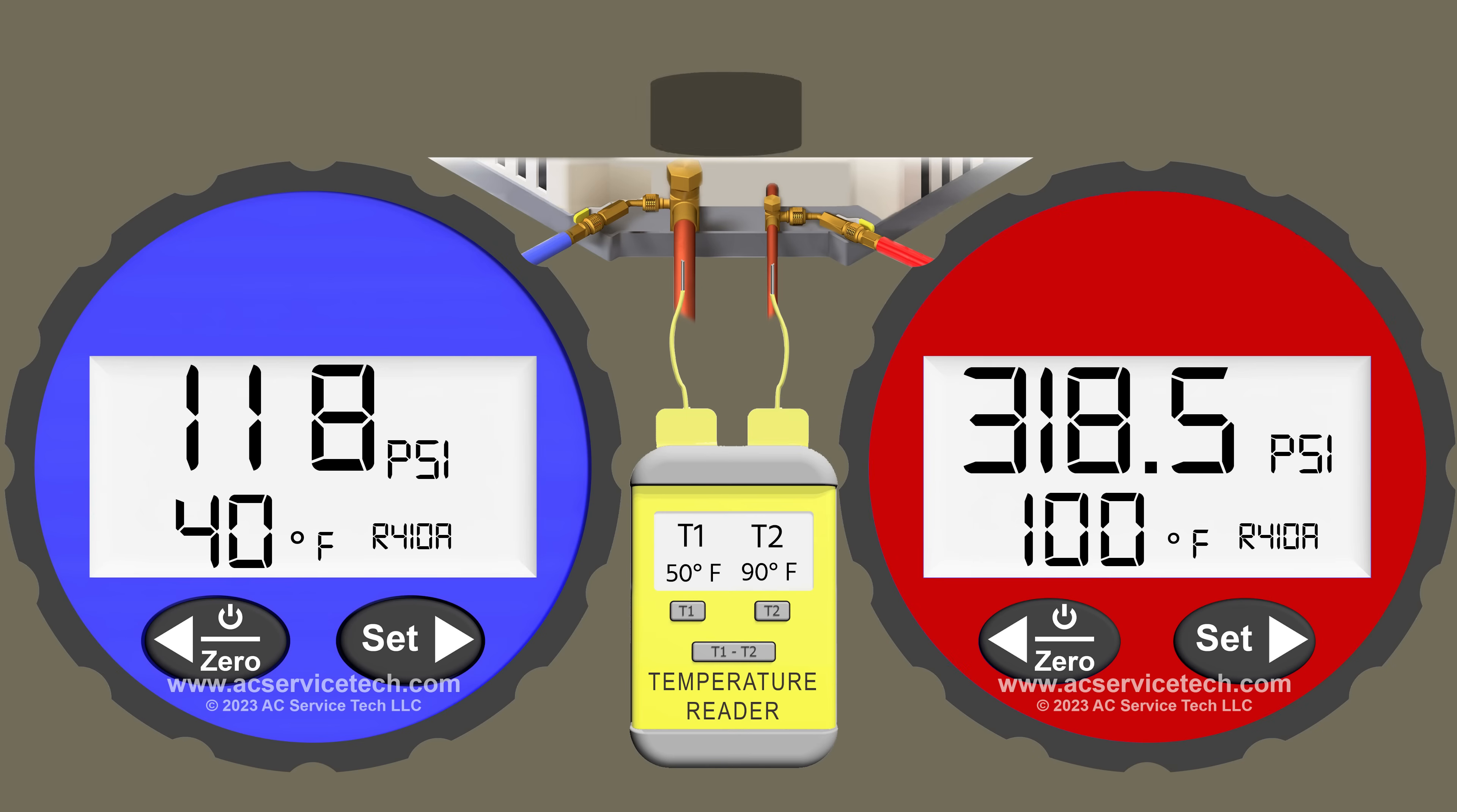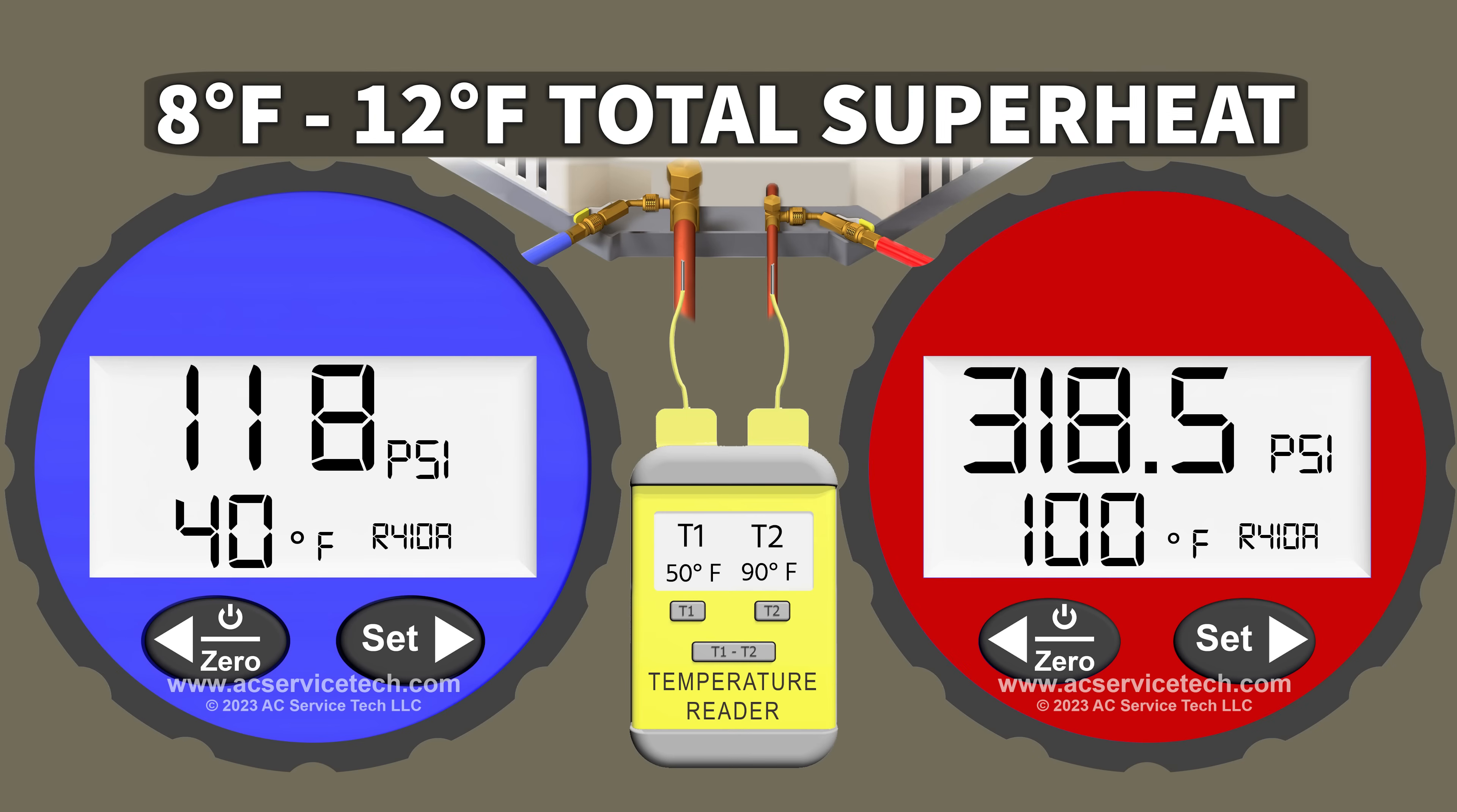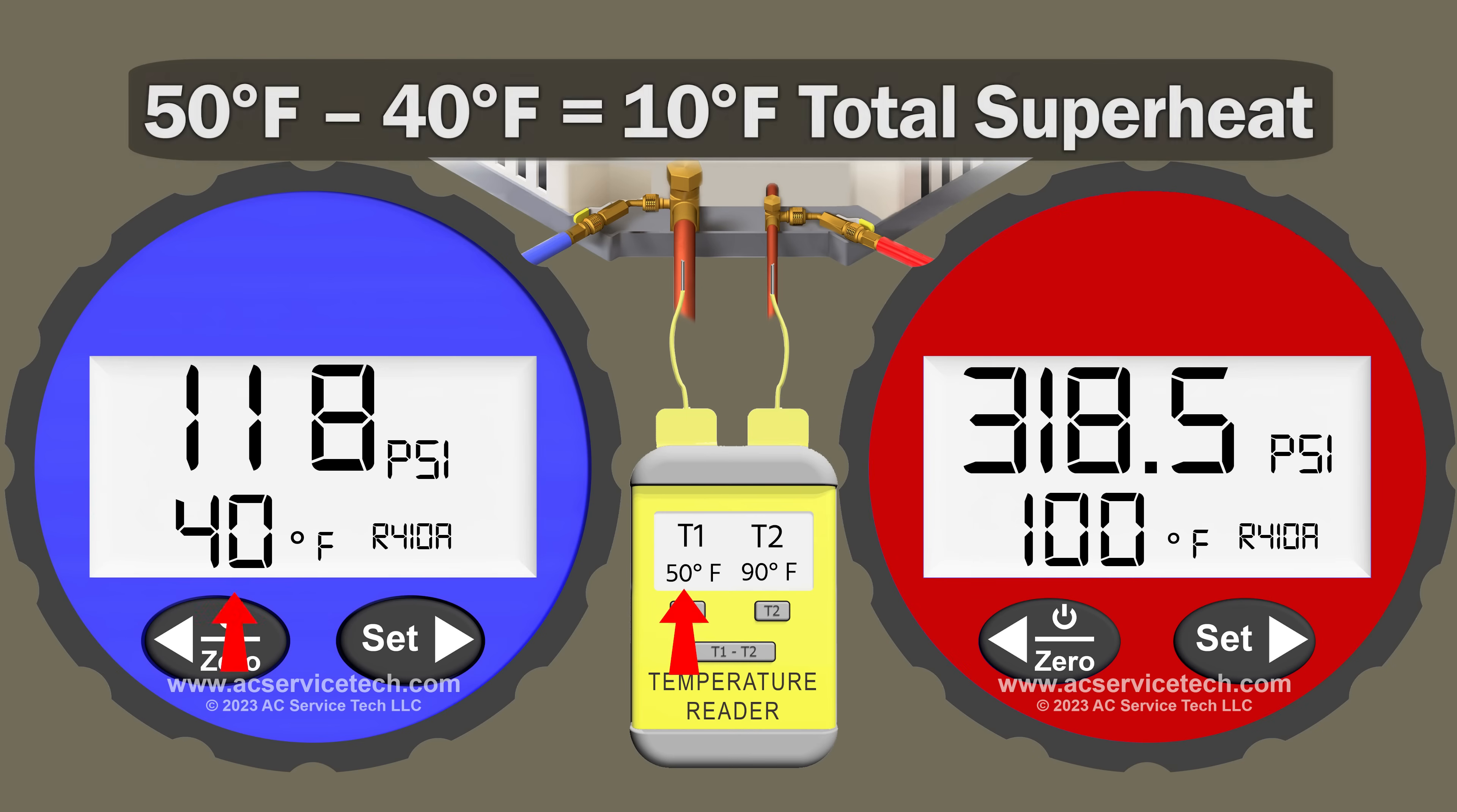Then you will go ahead and measure your superheat. You should have anywhere between 8 to 12 degrees, but really maybe 7 to 14 degrees is still okay, as your total superheat measured on your large vapor line at the outdoor unit.